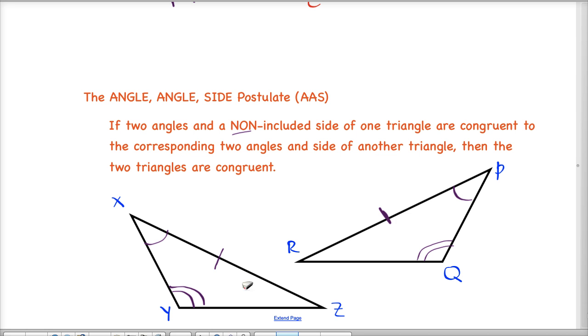Now the other nice thing about this is if it was maybe side RQ and YZ, that still qualifies. So angle, angle, side, that still works. So basically, if you have two angles and a side congruent, then that's enough to tell you that two triangles are congruent.